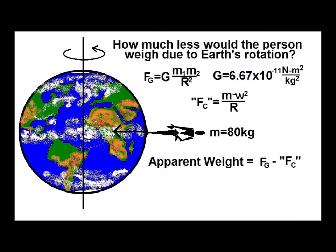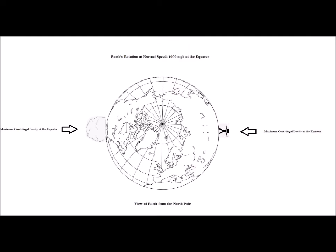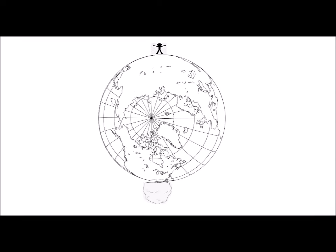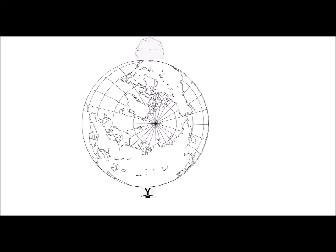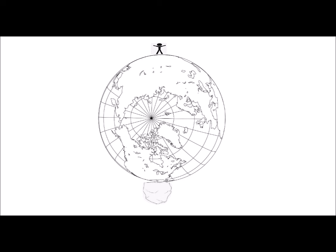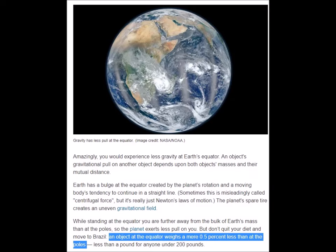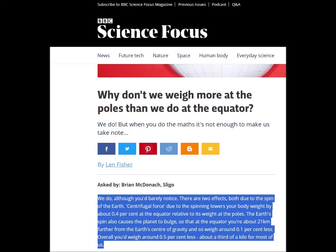Earth's rotation also produces a type of pseudo-anti-gravity via centrifugal force, with gravity functioning as the antagonistic centripetal force that keeps us from flying off the planet. This effect is strongest at the equator where ground speed is 1,000 miles per hour. An object at the equator weighs about 0.4% less than it would at the poles. Additionally, the earth's spin causes the center of the planet to bulge, so that at the equator an object is about 13 miles further from the earth's center of gravity and weighs an additional 0.1% less — for a total of 0.5% less weight at the equator than at the poles.